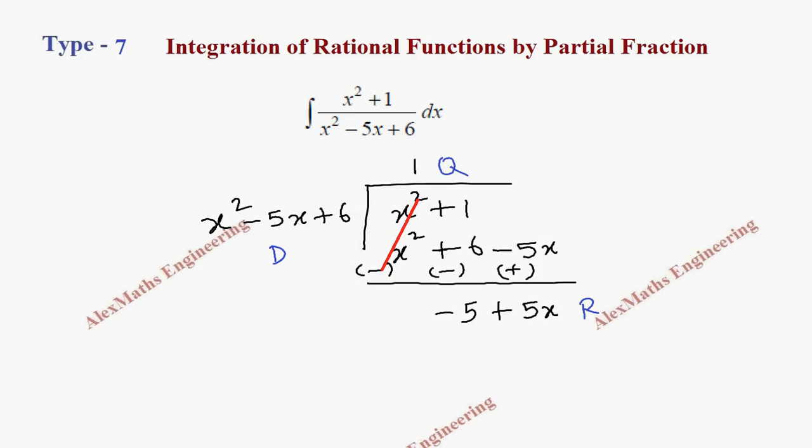This integration term can be written as quotient plus remainder by divisor times dx. So it is 1 plus remainder is 5x - 5, I just interchange this and write, divided by divisor.